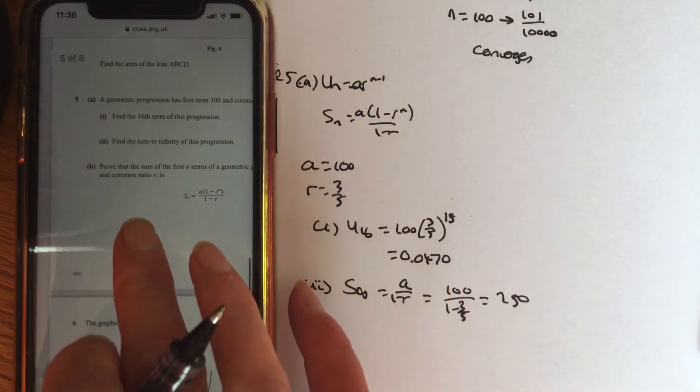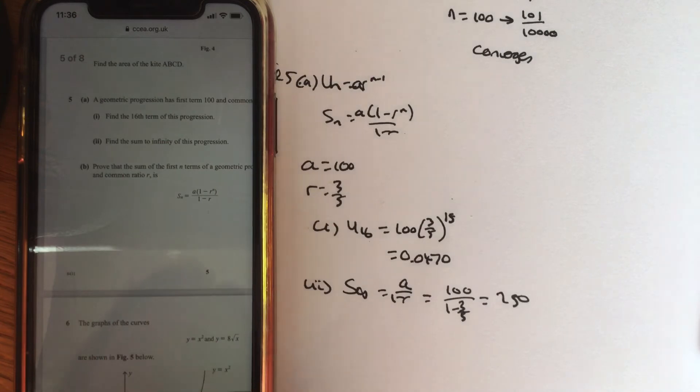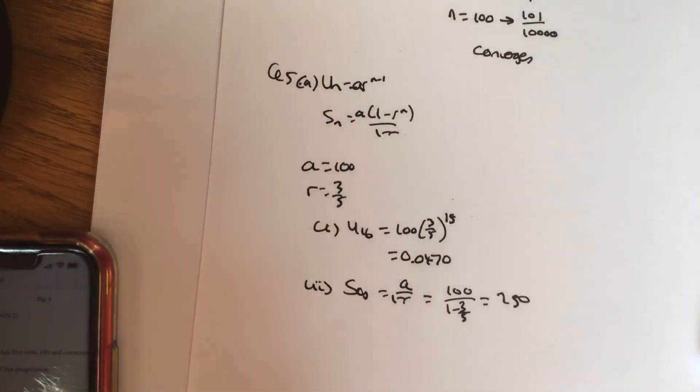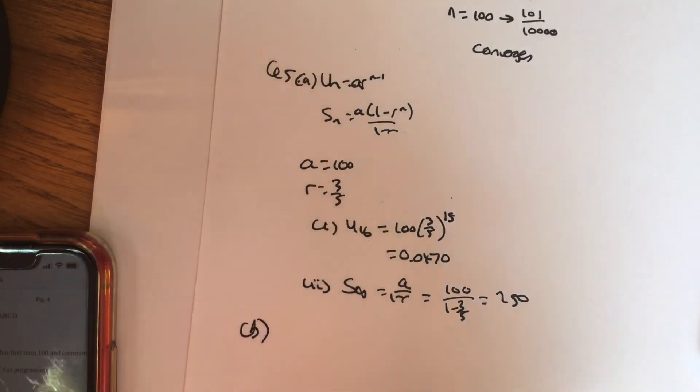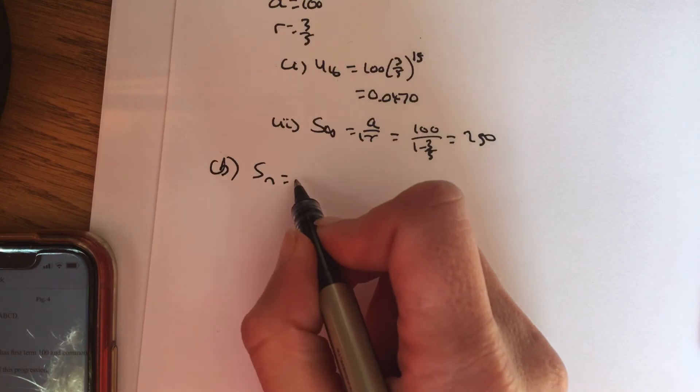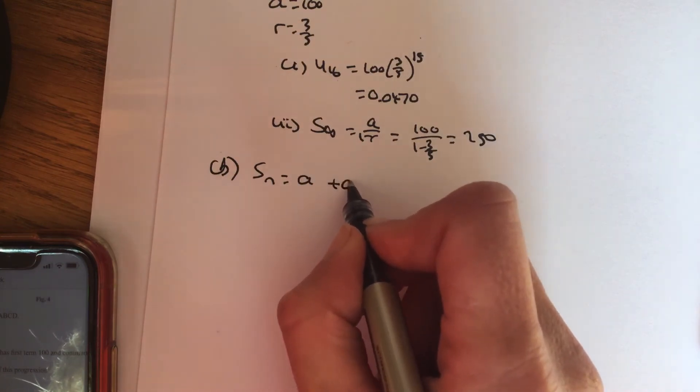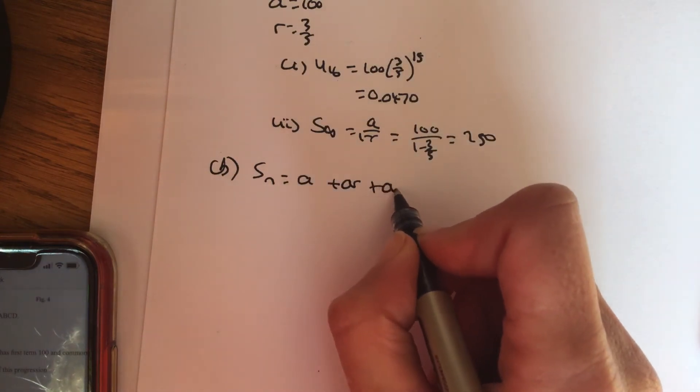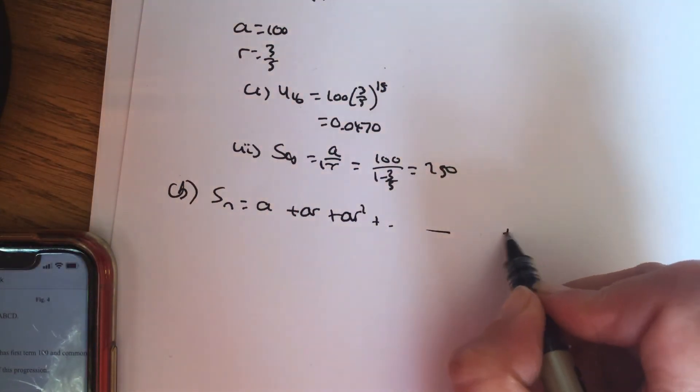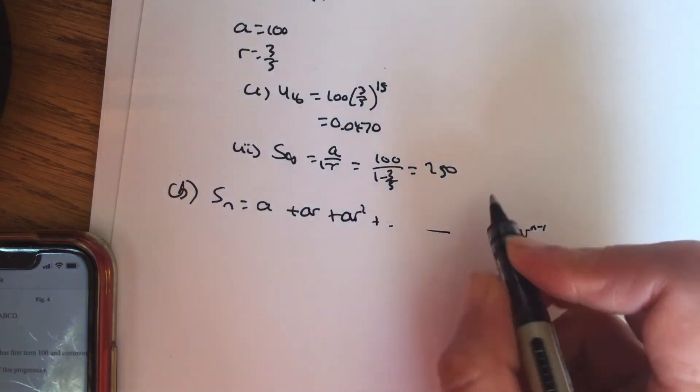Now, part b, prove that the sum of the first n terms is that formula. Okay, so let's give ourselves better room here. So, a GP starts off first term, the next term, the next one, a times a power of r each time. The last term in a GP is ar^(n-1). So the one before it is ar^(n-2).